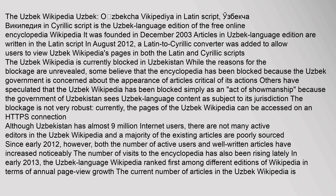Others have speculated that the Uzbek Wikipedia has been blocked simply as an act of showmanship, because the government of Uzbekistan sees Uzbek language content as subject to its jurisdiction. The blockage is not very robust. Currently, the pages of the Uzbek Wikipedia can be accessed on an HTTPS connection. Although Uzbekistan has almost 9 million internet users, there are not many active editors in the Uzbek Wikipedia, and a majority of the existing articles are poorly sourced since early 2012.